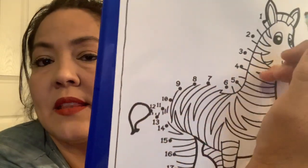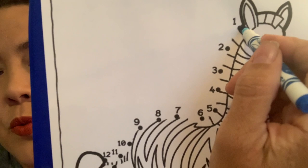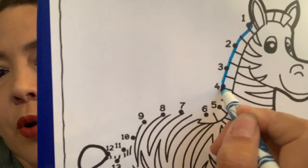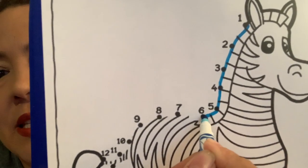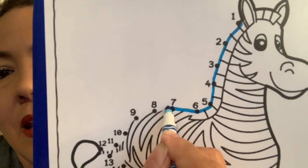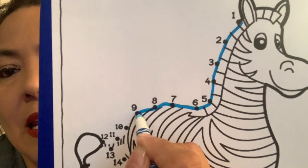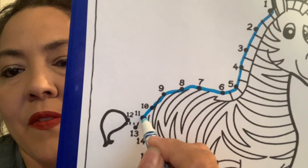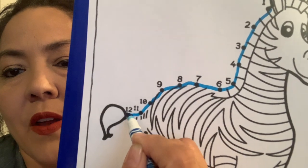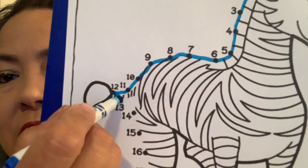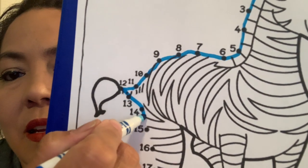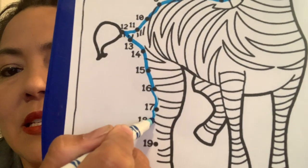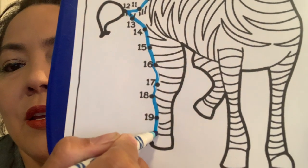Okay, so we're going to start at the number one. Then after one is two, three, four, five, six, seven, eight, nine, ten. Uh-oh, we've got to be slow through here. Eleven, twelve, then down to thirteen, fourteen, fifteen, sixteen, seventeen, eighteen, nineteen, twenty.